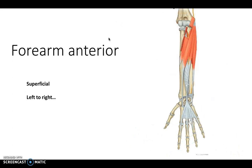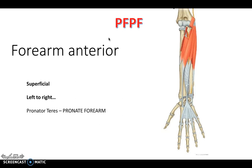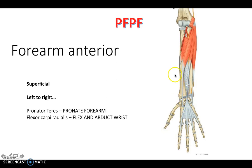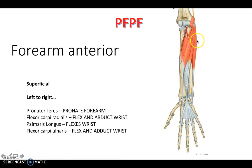Moving down to the forearm anterior, the forearm is split into superficial and deep layers. In the superficial layer there are four muscles. So we have pronator teres, which pronates the forearm. Then flexor carpi radialis, which runs down over the radius bone - remember the radius is on the side of the thumb no matter which way you turn your arm. Then palmaris longus, which flexes the wrist. And then flexor carpi ulnaris, running down the border of the ulna bone and attaching onto the fingers.